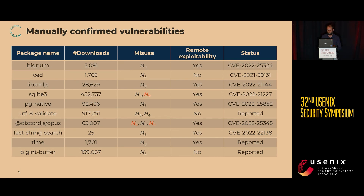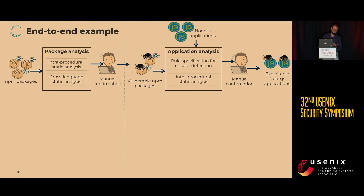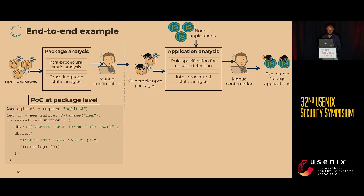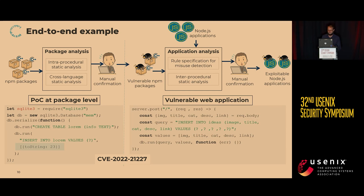Here is an end-to-end problem we identified: the SQLite3 package has a problem with its native extension. Whenever you pass a complex object with a toString property set to a value, it immediately crashes the Node.js process. This is problematic for web applications — if you send such requests repeatedly, the application repeatedly crashes and no users can be served. We found web applications that take POST requests, retrieve values, and forward them to the SQLite database, which can be exploited to repeatedly crash them.